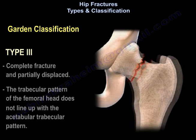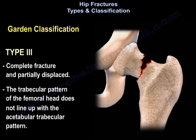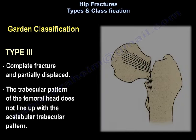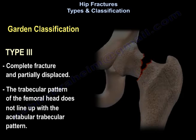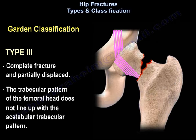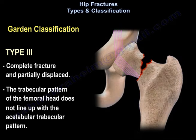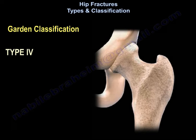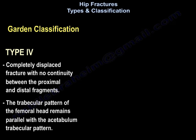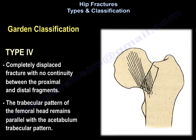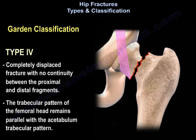Type 3 is a complete fracture that is partially displaced. The trabecular pattern of the femoral head does not line up with the acetabular trabecular pattern. In type 4, the fracture is completely displaced with no continuity between the proximal and distal fragments, and the trabecular pattern of the femoral head remains parallel with the acetabular trabecular pattern.